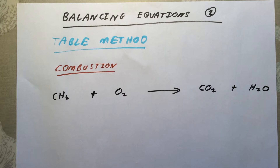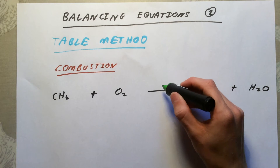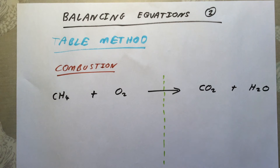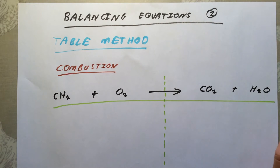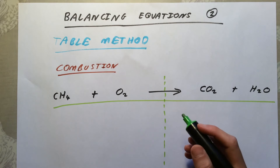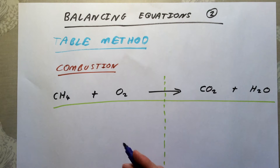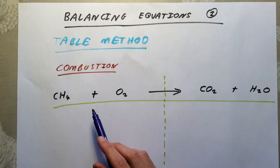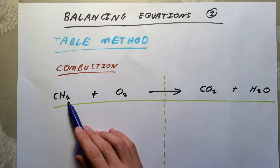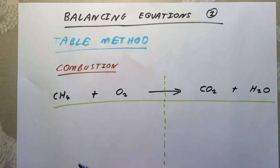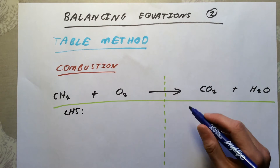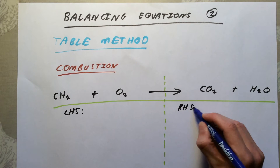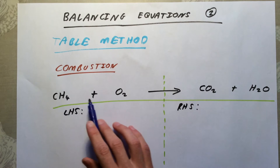In this table method, I'm going to start out just as I did before with the bubble method by drawing a dashed line straight down the middle. This time, however, I'm not going to draw out using bubbles how the atoms are arranged. I'm instead simply going to write them in a table. It is quicker, this method. However, you really need to understand what the small numbers mean before you start using this method, or you might hit a brick wall. So I'm just going to write LHS left-hand side there, right-hand side there, and then underneath that I'm going to write out the elements I have in my equation.